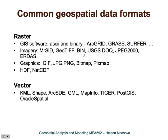Now we have raster and vector data and can convert between them, but we also need to be aware that the raster model and vector model can come in different data formats, which is very much dependent on software specifications. Each GIS software has its own internal raster format and usually also its own ASCII data exchange format. We will be working with Arc Grid and GRASS formats, and you may also need the Surfer raster format.